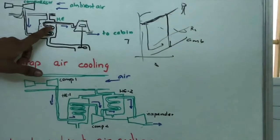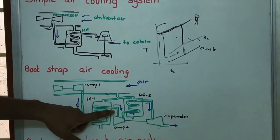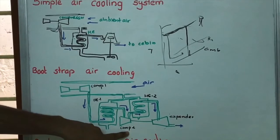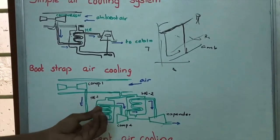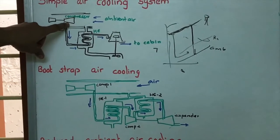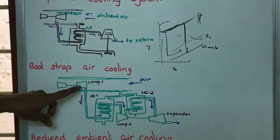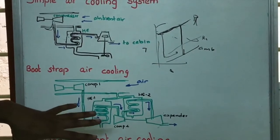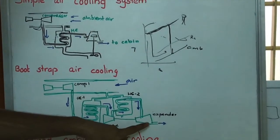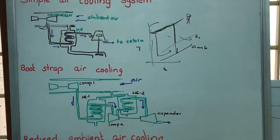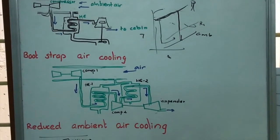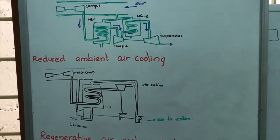In the bootstrap air cooling system, the same process occurs, but after the first heat exchanger a second compressor is added so that the air is compressed once again. It is then fed to another heat exchanger to reduce the temperature again, and finally fed to the expander. In the simple system, compression is achieved only once, but in the bootstrap system two compressors allow much greater compression. With more compression, the expansion in the expander is greater, resulting in a larger temperature reduction and increased cooling effect.